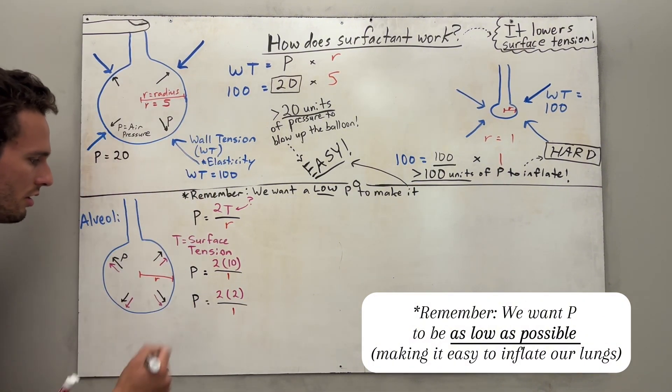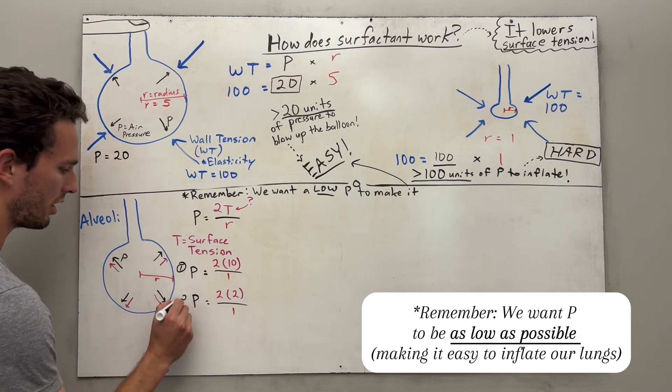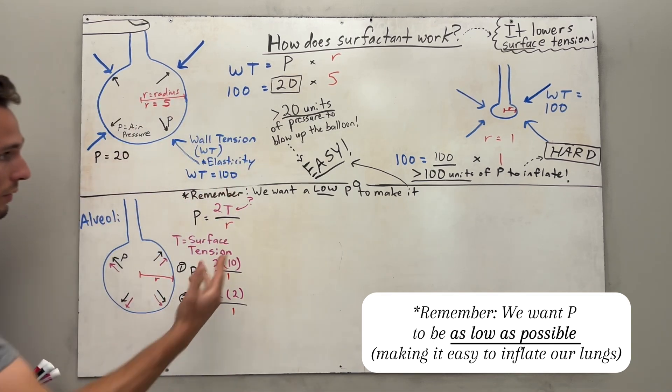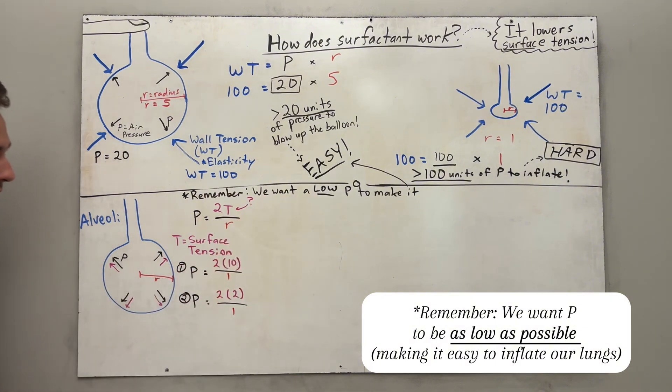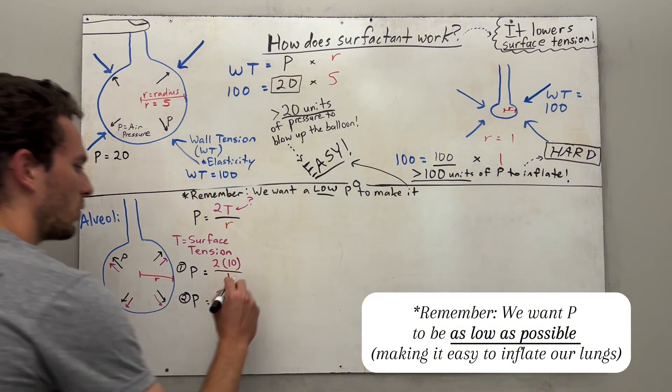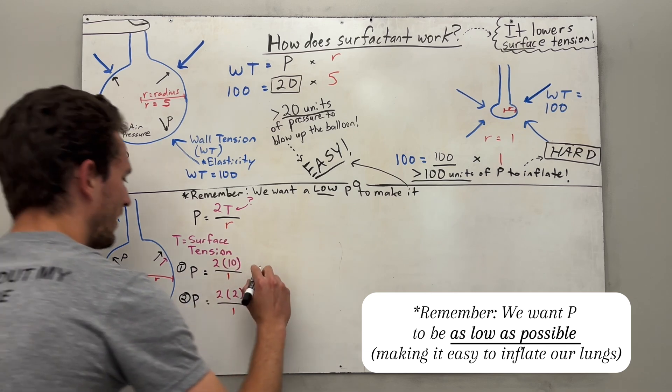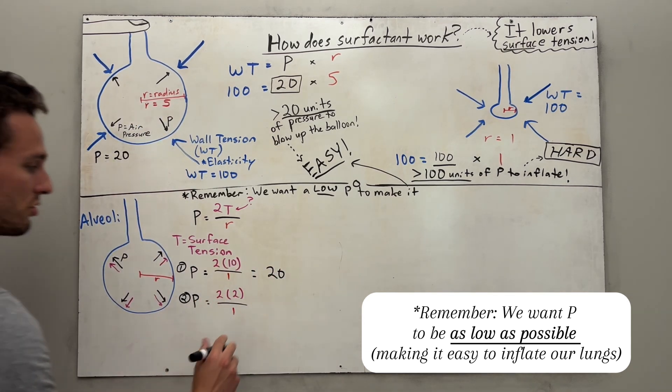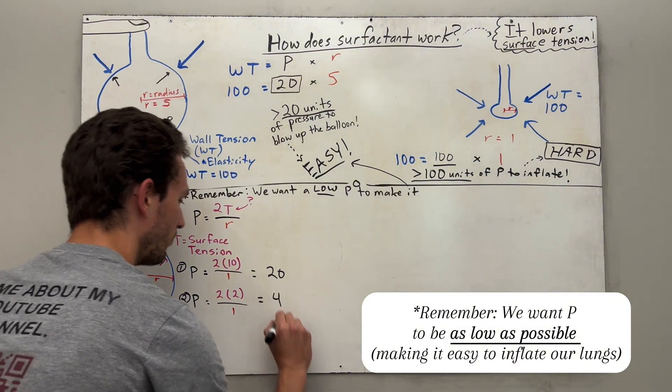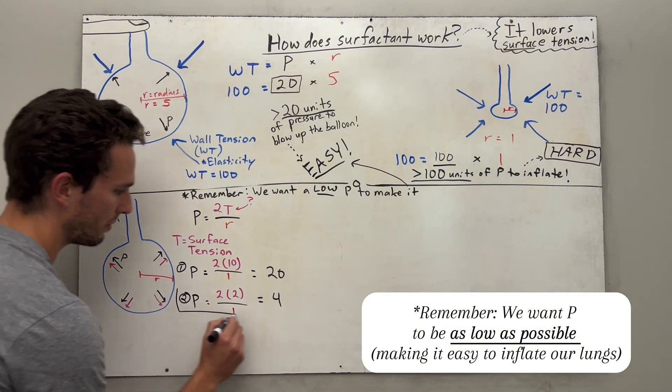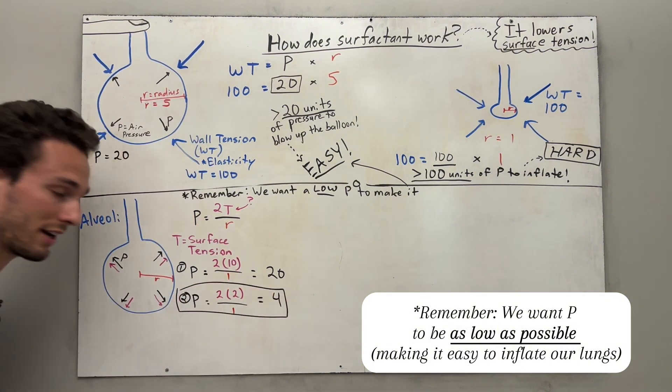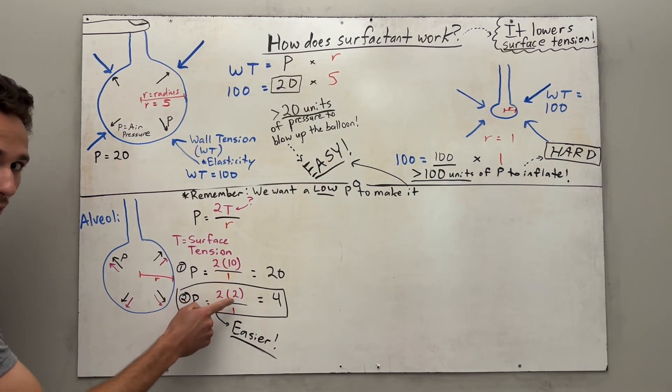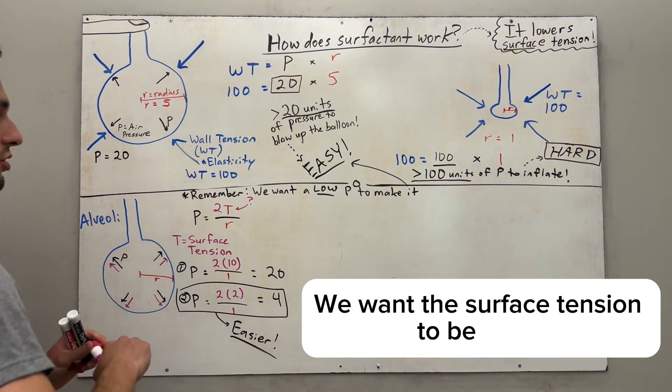Which of these scenarios, scenario 1 or scenario 2, would be easier to breathe in? In other words, which one would have the lowest P? Well, obviously, if you do the equation, you've got 2 times 10 over 1, that's going to be a pressure of 20. And in the second case, we've got 2 times 2 over 1, which is actually a pressure of 4. So if you answered number 2 would be easier, you would be correct. So therefore, do we want the surface tension to be high or low? We want the surface tension to be low.